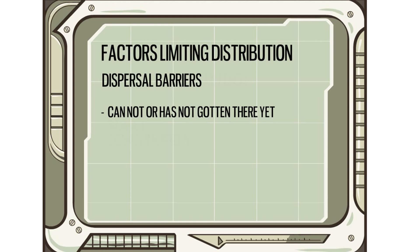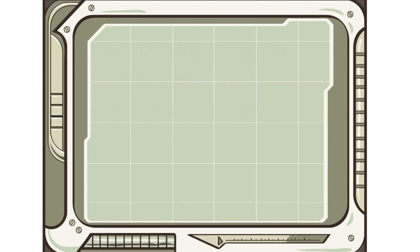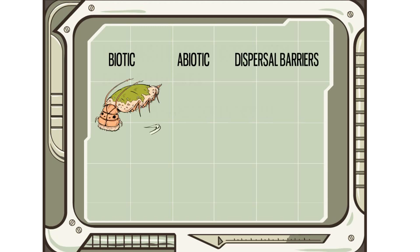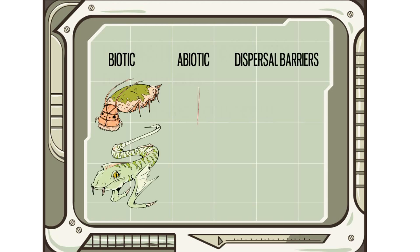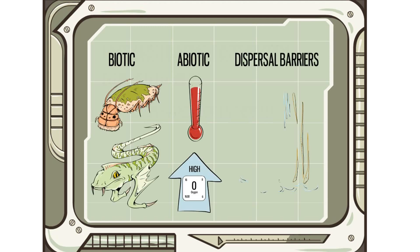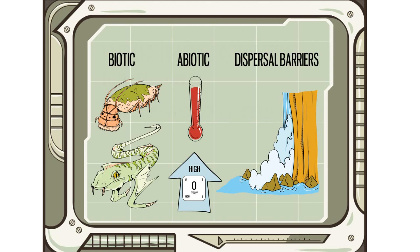Back on planet Zed, vampire eels and roach crabs represent biotic factors; water temperature and dissolved oxygen represent abiotic factors; and the potentially lethal falls represent a dispersal barrier that might restrict three-hops to the upland lakes and streams.